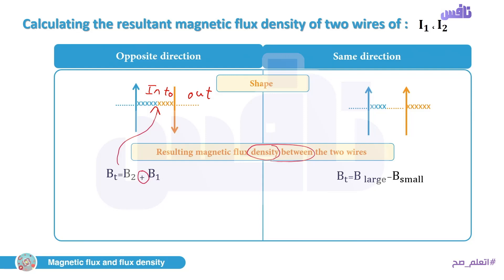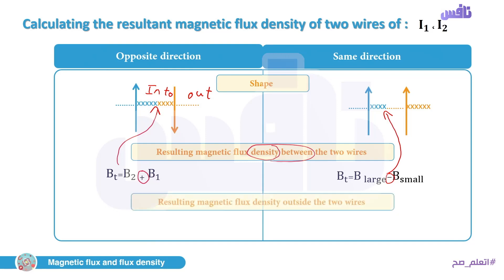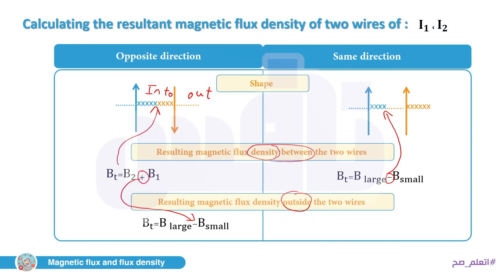For same-direction currents: between the two wires the fields are in opposite directions, so B_total = B_large − B_small. Outside the two wires the fields are in the same direction, so B_total = B₁ + B₂. The two cases always have opposite signs — one uses plus, the other uses minus.